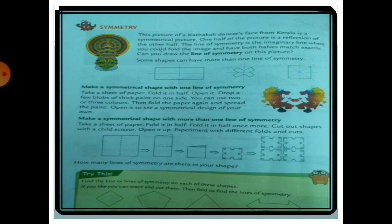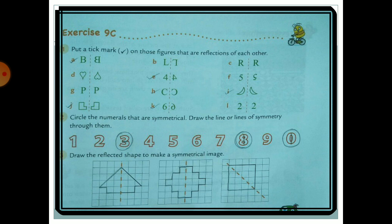Exercise 9C: Put a tick mark on figures that are reflections of each other. A — yes, tick it. B — the reflection of L is wrong, so no. C — correct reflection, tick it. D — the heart/leaf shape flips incorrectly, so no. E — the reflection of 4 is correct, tick it. F and G — no. H — yes, tick. I — yes, tick. J — yes, tick. K — yes, tick. The last one — no.